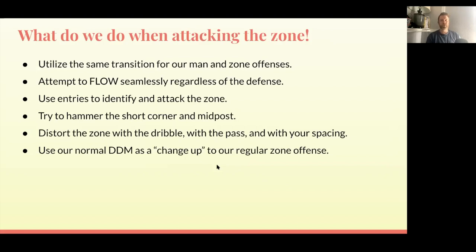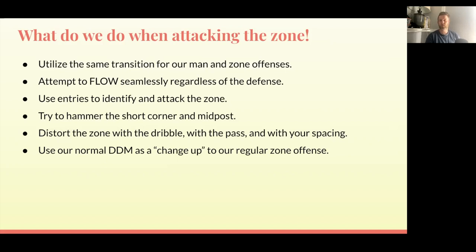What do we do when attacking the zone? We utilize our same transition from our man-to-zone offense. We're running our two to the corner, our three to the corner, our one is pushing, our five is trailing, and our four is getting opposite the ball into the dunker spot. We're really trying to get the ball ahead and play out of flow and transition as much as possible, even if they're in zone.